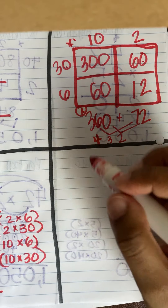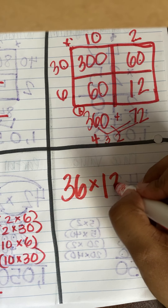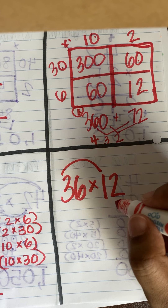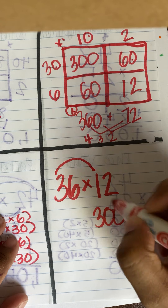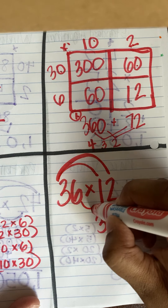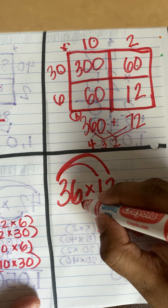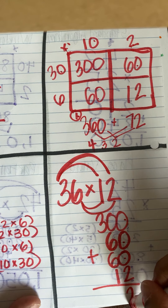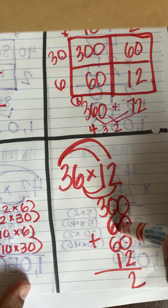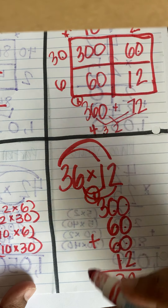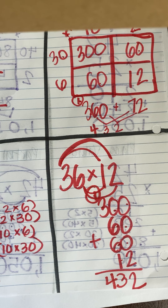Lastly we have our partial products: 36 times 12. I have 30 and 10: 30 times 10 is 300. Then 30 times 2 is 60. Then 6 times 10 is 60. And lastly 6 times 2 is 12. I'm going to put all of these together: 0 plus 0 plus 0 plus 2 gets me 2, 0 plus 6 plus 6 plus 1 is 13 tens — put my 3 here, my 1 over here, I have 100 and 300, that's 432. Therefore there were 432 ounces of cookie dough that was baked.